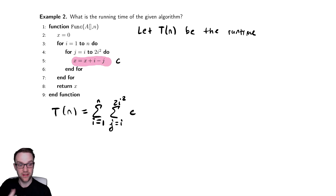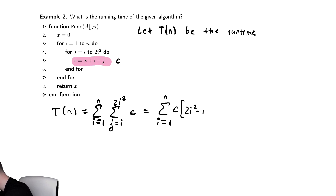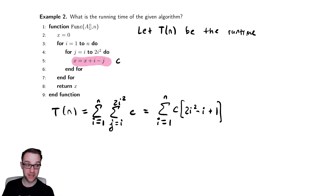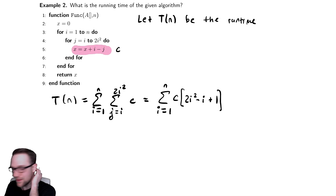Since j does not appear inside of the summation, this is equal to the sum from i equals one to n of c times the top bound of the sum minus the bottom bound of the sum plus one. Remember that that quantity — top minus bottom plus one — is the number of terms in the summation. Now we can try to simplify that, but maybe we can't.